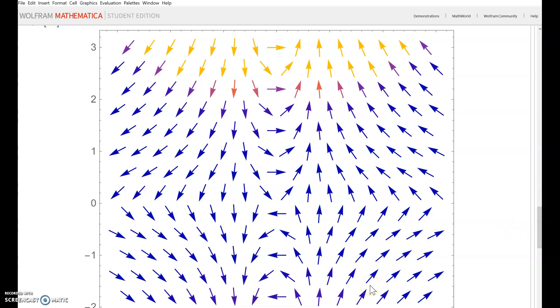It points in the direction of steepest ascent. This gradient vector field is like a hiking map. Imagine you're a hiker wanting to go uphill. Starting at x=1, y=-2, you follow the arrows uphill in this direction. If you start elsewhere, you follow the arrows accordingly.